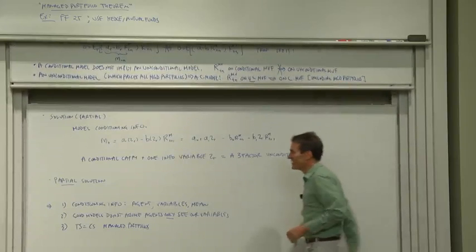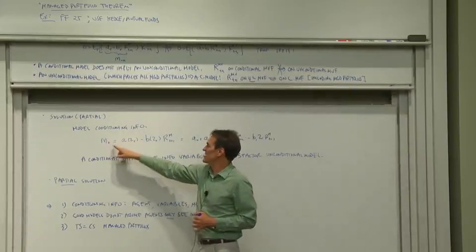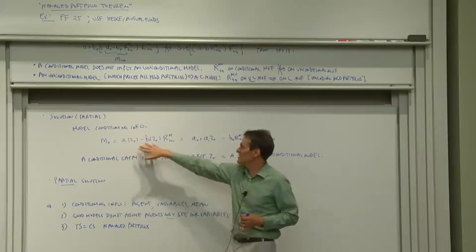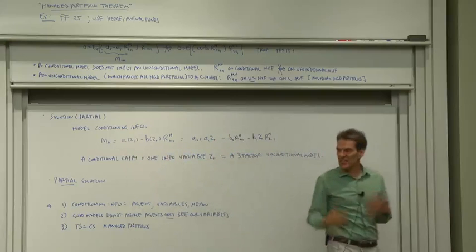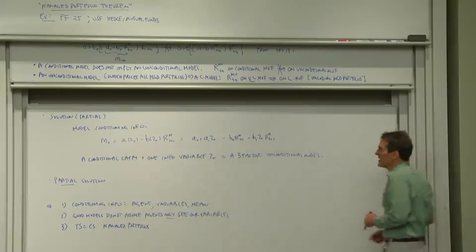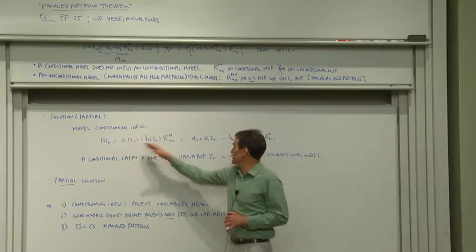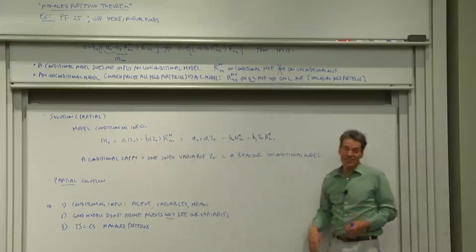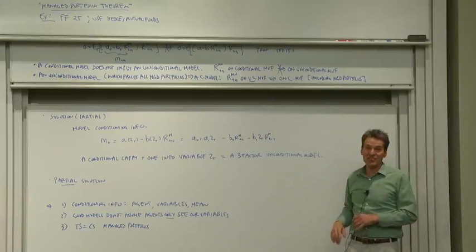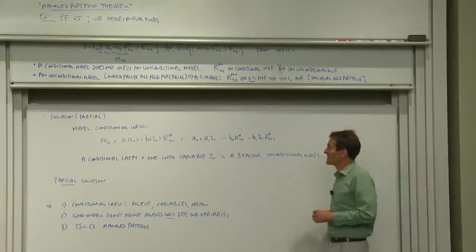Let us model the conditioning information, A of Z and B of Z, since we've decided this variable Z captures the conditioning information. And as long as we're making functions, we might as well make linear functions, because non-linear, Z squared is just another instrument, so all functions are basically linear functions.